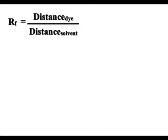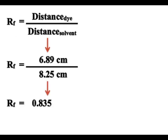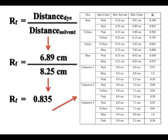Great. Now we can use this data in our formula, RF equals distance of dye over distance of solvent, to calculate the retention factor for each component in both the knowns and unknowns.